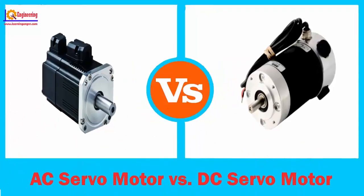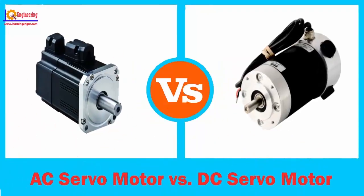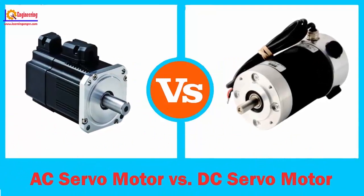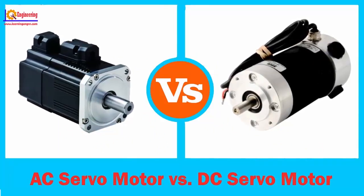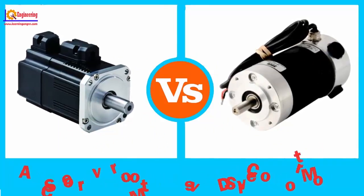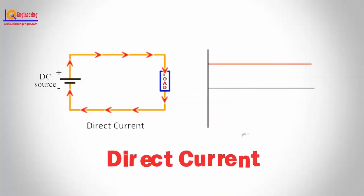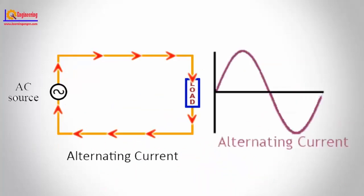The main distinction between an AC servo motor and a DC servo motor comes right down to how electricity works. DC, or direct current, has both a positive and a negative terminal, with the current flowing in the same direction between each terminal. AC, or alternating current, operates in reverse, where the current alternates 50 or 60 times per second.